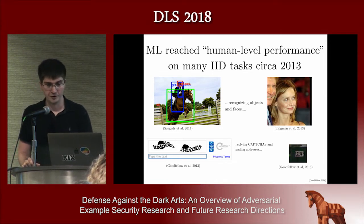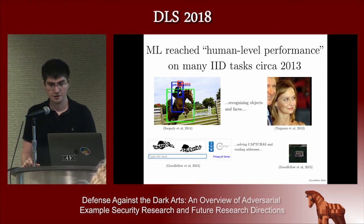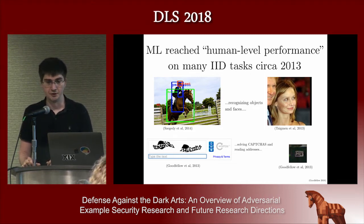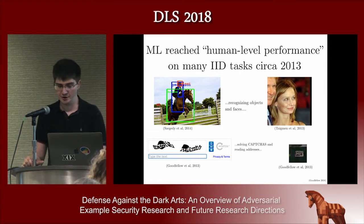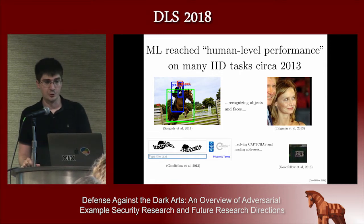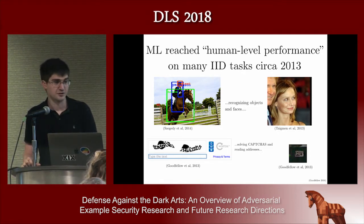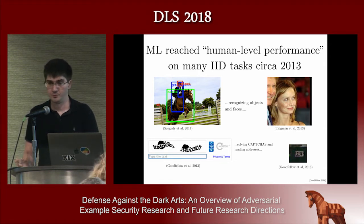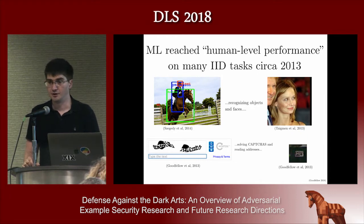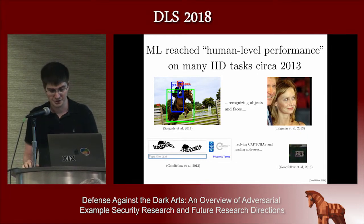We found we were able to recognize objects in photos and score as well as a human, recognize faces on certain benchmarks, read obfuscated text better than a human and remove the usefulness of text-based CAPTCHAs, and transcribe text from photos in non-adversarial settings very effectively.